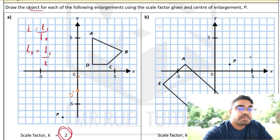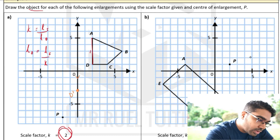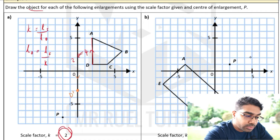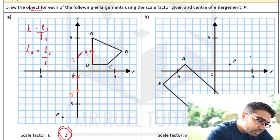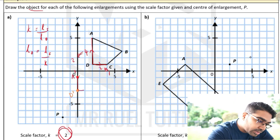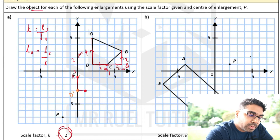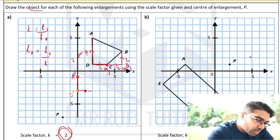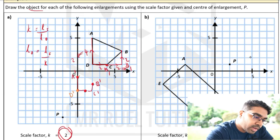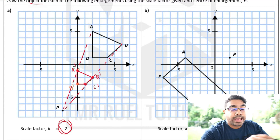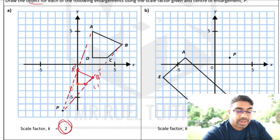Now we can continue using the anchor point instead of the center. From here we go up 4 units, but divided by 2 that becomes 2 units up. Then 2 units to the right divided by 2 becomes 1 unit. From C to B we go 2 right and 2 up, both become 1 after dividing by 2 — so 1 unit right and 1 unit up. Now we have all our points, so we join them together. This is the object of this image under enlargement with scale factor 2 at center P.